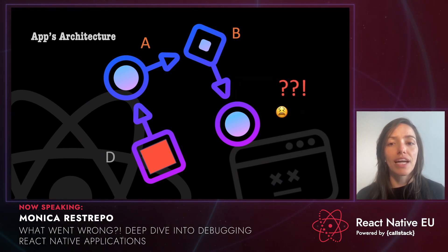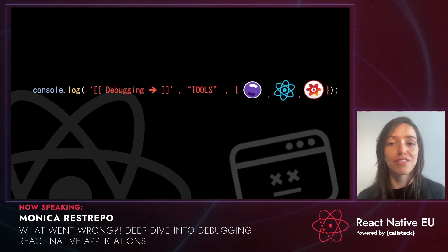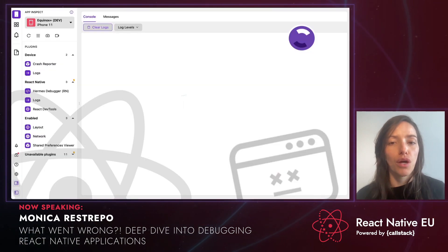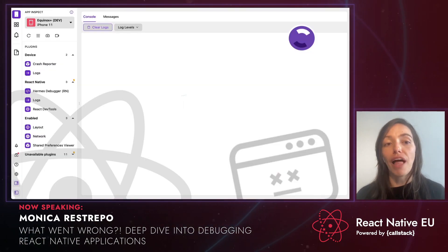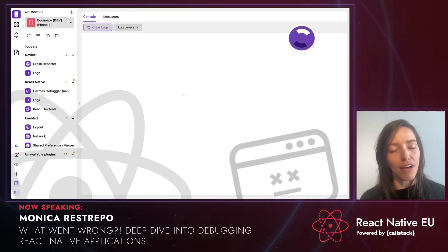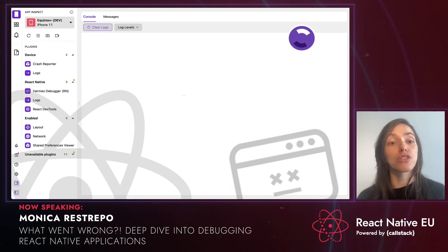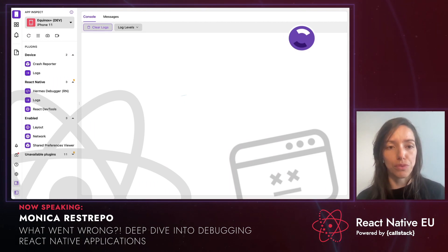So what options does React Native offer for debugging besides our beloved and often very useful console log? Let's start with Flipper. Flipper is a platform for debugging iOS, Android, and React Native apps. Support for it was added to React Native since version 0.62.